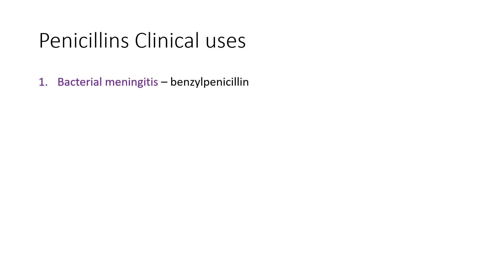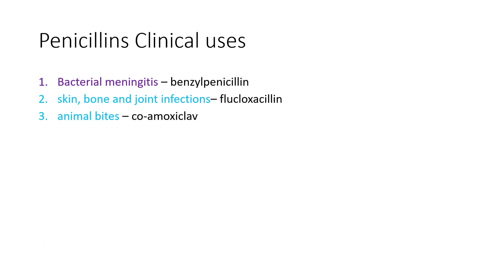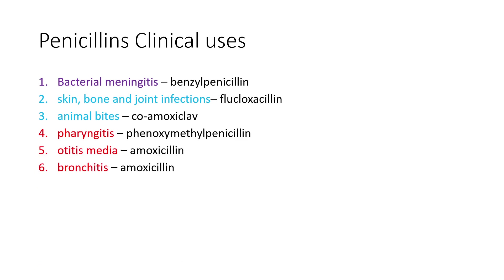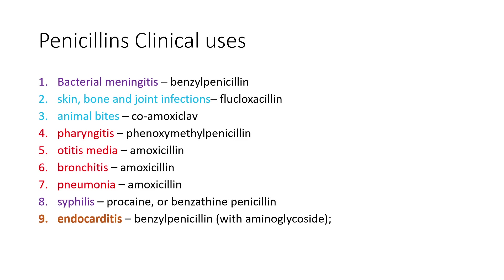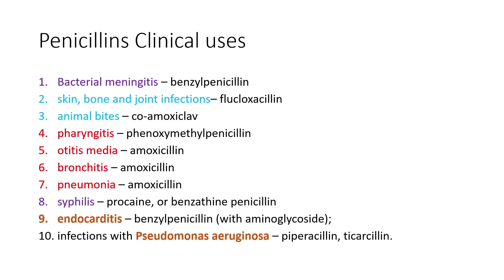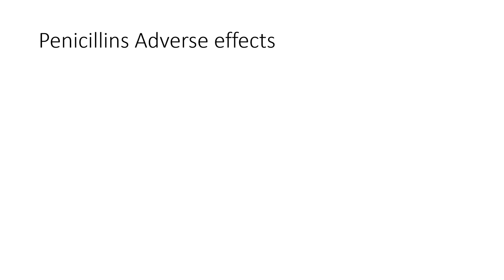Regarding clinical uses: benzyl penicillin is used in bacterial meningitis. Flucloxacillin and co-amoxiclav can be used in skin, bone, and joint infections as well as animal bites. Phenoxymethyl penicillin is used for pharyngitis. Amoxicillin is used in otitis media, bronchitis, and pneumonia. Penicillin — specifically procaine or benzathine penicillin — is the drug of choice for syphilis. Benzyl penicillin with aminoglycosides is used for endocarditis. Piperacillin and ticarcillin are used for Pseudomonas aeruginosa infections.